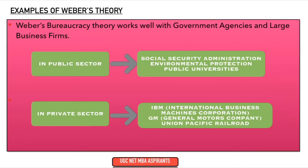Weber's bureaucratic theory works well with government organizations and large business firms. Since many employees work in such organizations, having proper hierarchy, formal rules and regulations, and formal selection makes it easier to control them. Good examples in the public sector are social security administration, environmental protection, and public universities. In the private sector, Weber's bureaucratic theory is applicable to IBM (International Business Machine Corporation), GM (General Motors Company), and Union Pacific Railroad.